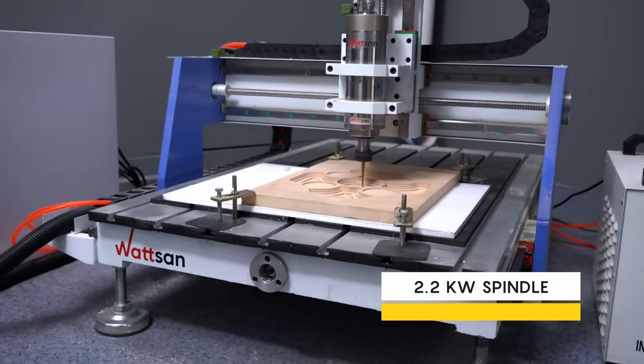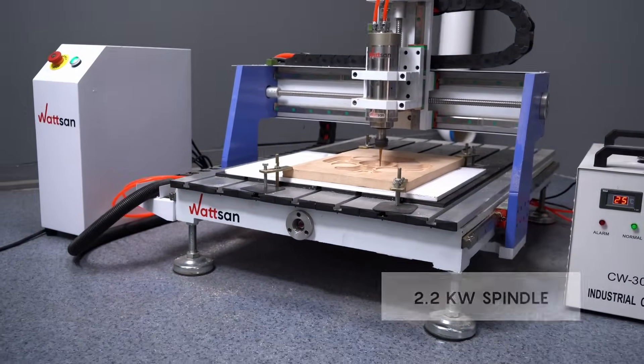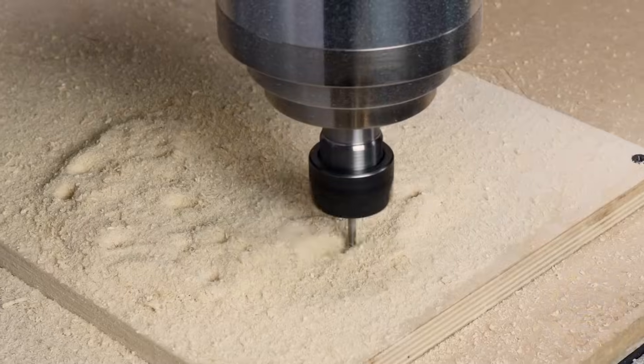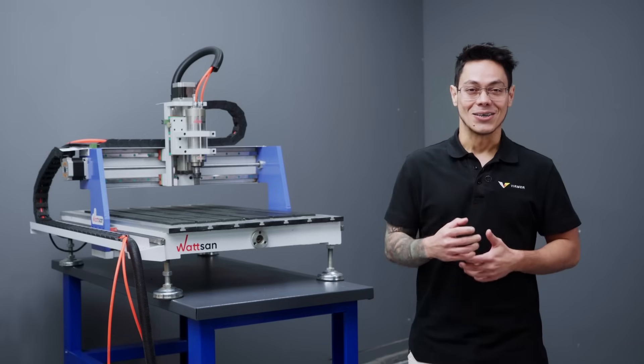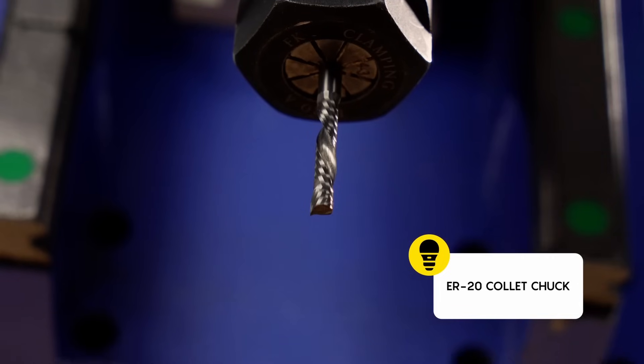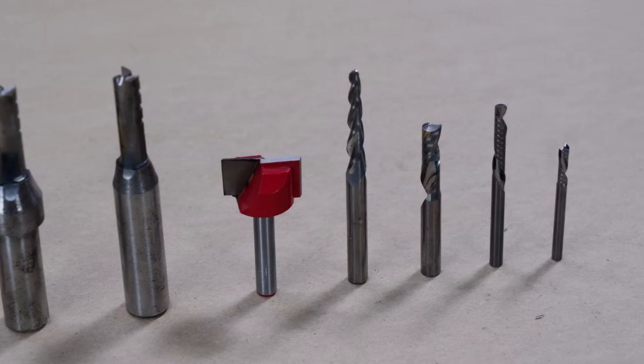In standard configuration, the machine comes with 2.2 kilowatts, suitable for processing softwood, MDF, acrylic, plastic and more. It also includes an ER20 collet chuck, compatible with various milling cutters.